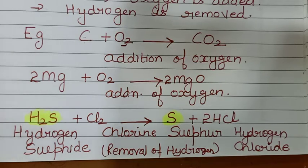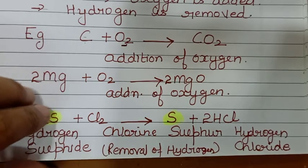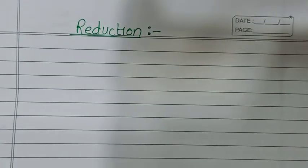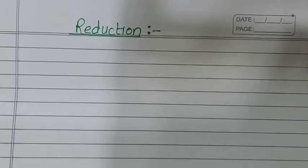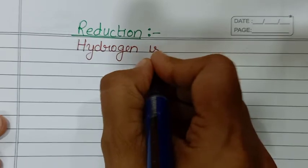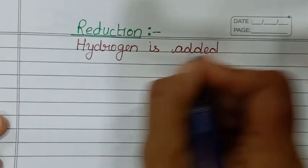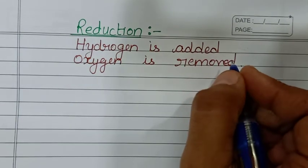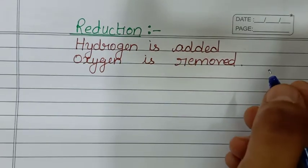Next definition: reduction. Those reactions in which hydrogen is added or oxygen is removed are called reduction. For example: H2 plus Cl2 gives 2HCl — hydrogen is added to Cl2, so this undergoes reduction.